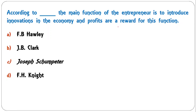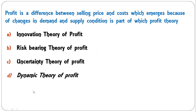According to dash, the main function of the entrepreneur is to introduce innovations in the economy, and profits are a reward for this function. This concept was given by Joseph Schumpeter in the innovation theory of profit.